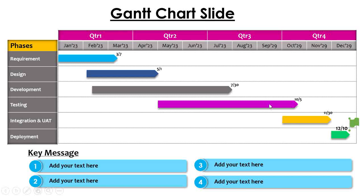Hello friends, welcome! In today's video we are going to see how we create a Gantt chart slide. You can see I am presenting my screen and I am putting this Gantt chart for an IT project. On the left hand side you can see that we have different phases for the IT project and on the right hand side we can see a calendar at the top, and then we have a bar showing the ETAs for every phase. In the bottom section you can add a key message — there is a placeholder for this.